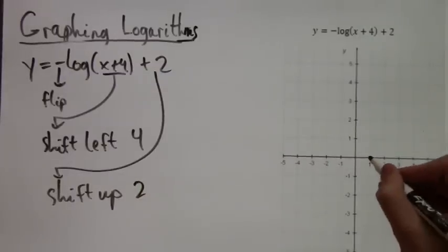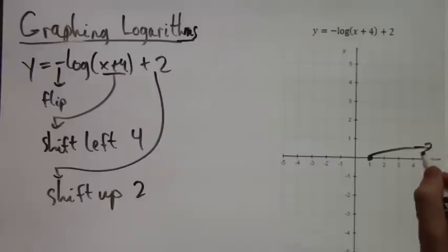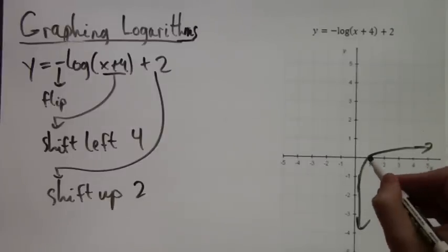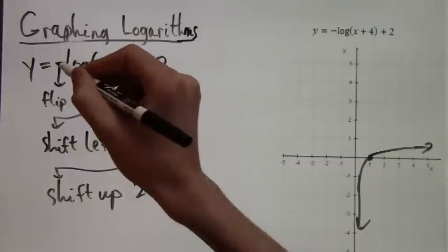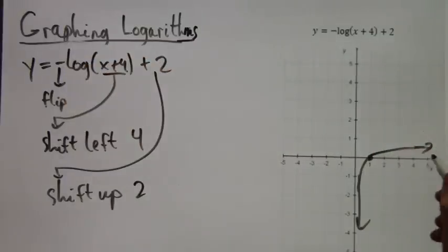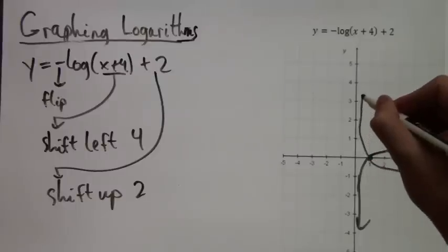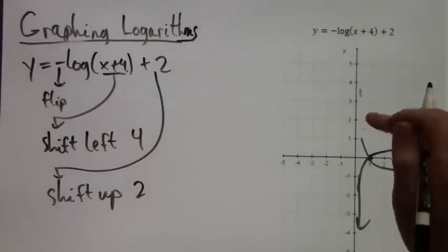The first thing we want to do is just draw the original log x—just a sketch. There it is, starting by the y-axis, going up through (1,0) and slowly increasing. Now we have to flip. What I mean by the flip is literally flip it around the x-axis, so you see how we get this sort of mirror image.